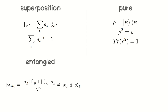A pure state is a specific non-mixed quantum state. It is a state for which you have complete knowledge. If a quantum system is in a pure state, you can describe it with a single wave function or a ket vector. The state is determined with certainty and there is no statistical uncertainty associated with it.